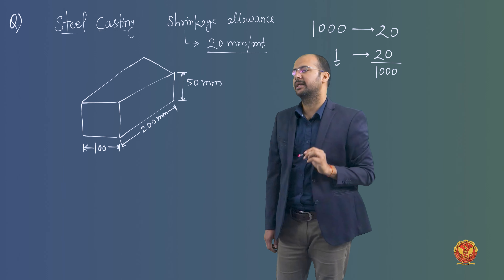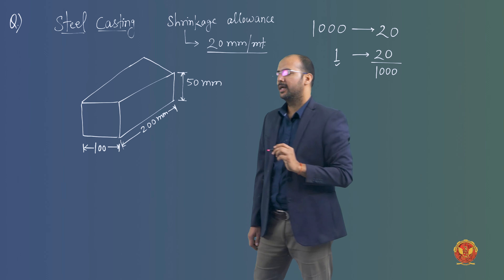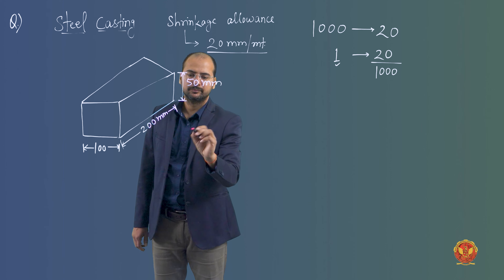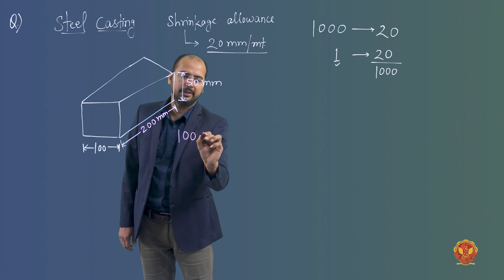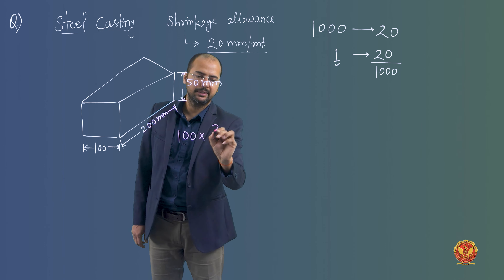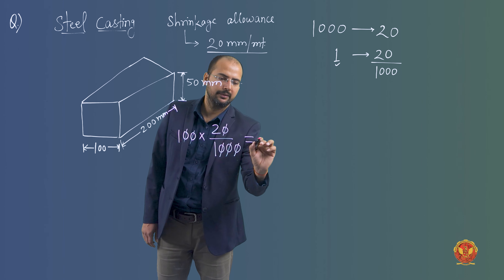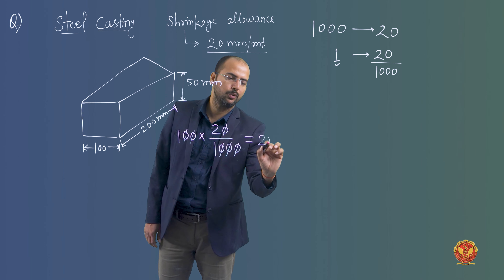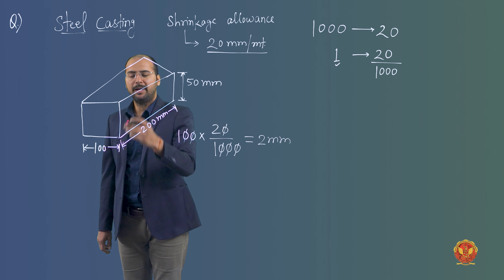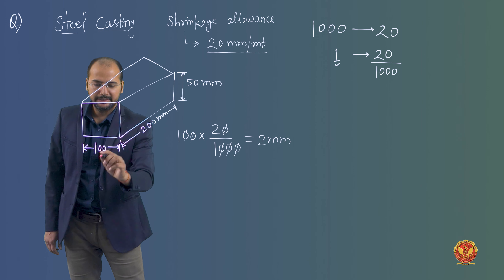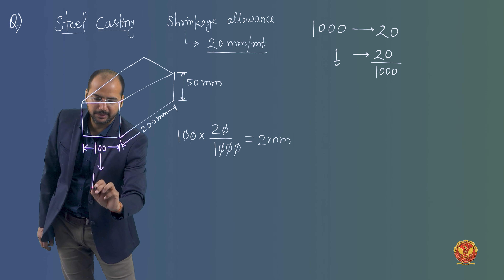For the 100 mm dimension, we calculate: 100 × 20 / 1000 = 2 mm. So the pattern dimension for this side will be 102 mm.